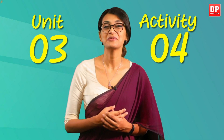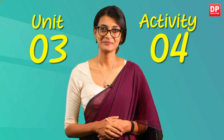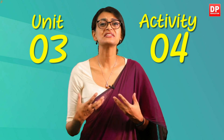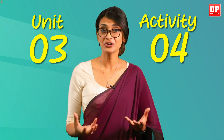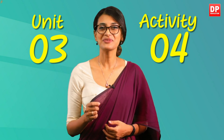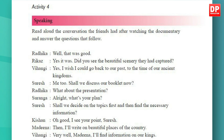Now let's read a very different type of dialogue. Let's look at Unit 3 in our pupils book, Activity 4, page 28. When we read it, you will realize how different the style and language is in this dialogue. This conversation is amongst friends who comment on a documentary that they had watched. Let's read it together. Activity 4 — Speaking: read aloud the conversation the friends had after watching the documentary and answer the questions that follow. 'Well, that was good.' 'Yes, it was.' 'Did you see the beautiful scenery they had captured?' 'Yes — I wish I could go back to our past, to the time of our ancient kingdoms.' 'Me too. Shall we discuss our booklet now? What about the presentation?' 'All right, what's your plan?' 'Shall we decide on the topics first and then find the necessary information?' 'Oh good, I see your point, Suresh.'